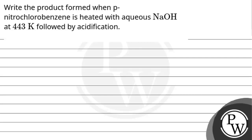Hello, so let's read the question. The question says: write the product formed when para-nitrochlorobenzene is heated with aqueous NaOH at 443 Kelvin followed by acidification.